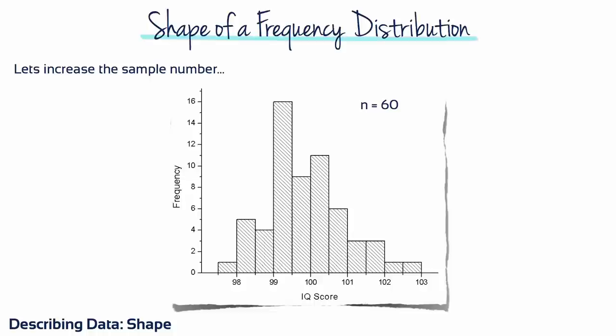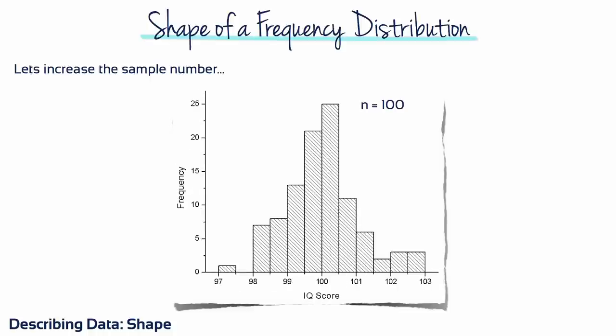Let's increase the sample size to 60. Again, it's big in the middle with fewer scores at either side. As the sample size increases, here we have N of 100, the more triangular or pyramid shape the frequency distribution becomes.